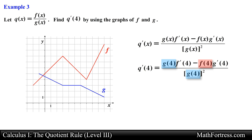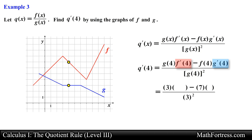Let's first find g of 4 and f of 4. These values are essentially the y-coordinate of the functions at x equals 4. Looking at the graph we see that g of 4 is equal to 3 and f of 4 is equal to 7. Now let's find the values for the derivatives. Recall that the geometric interpretation of the derivative is represented by the slope of the tangent line to the curve at a particular value of x. So f prime of 4 represents the slope of the tangent line to f at x equals 4.